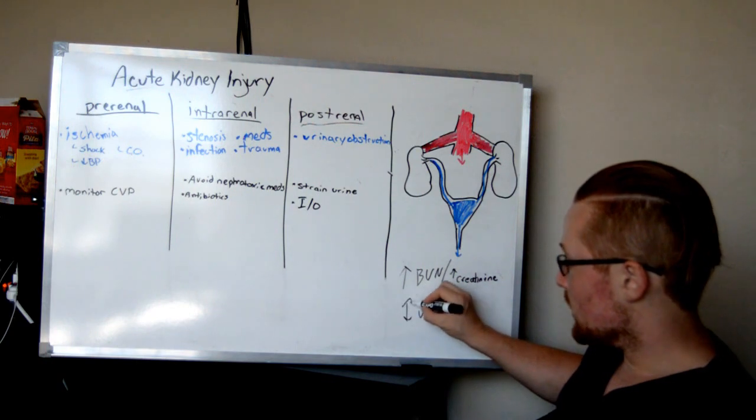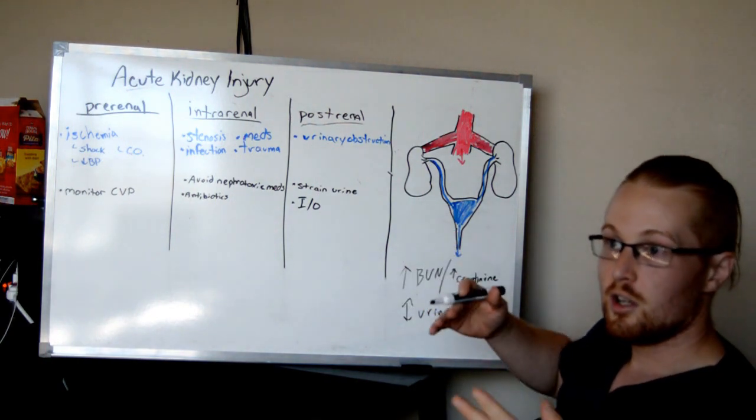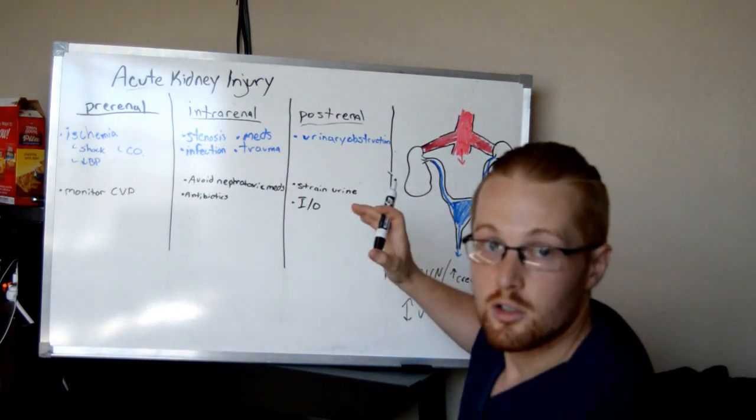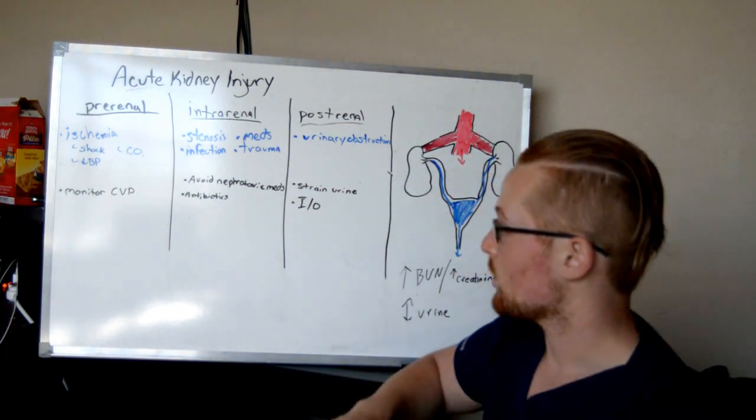And in fact, that can actually go both ways. You can have too much. They're just letting it dump out. Now, what causes the kidneys to become damaged? There are three causes or three categories.